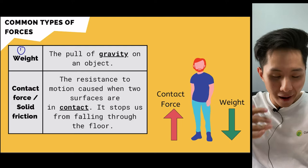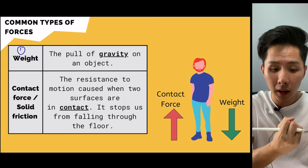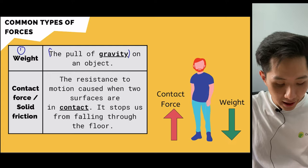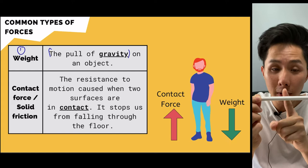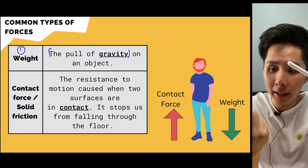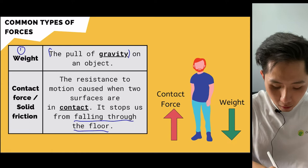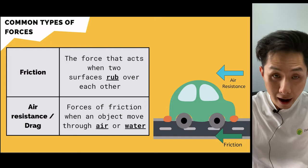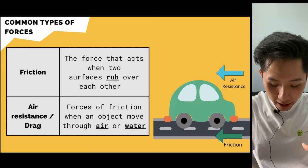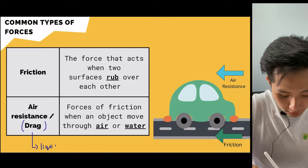In physics, weight is the gravitational force exerted by the Earth on all objects. We also have contact force — for instance, I'm holding this pen and gravity is acting on it, but it doesn't fall down because of the contact force between the pen and my finger. It stops us from falling through the floor. The third type is friction, the force that acts when two surfaces rub against each other. And air resistance is similar to friction but happens in air, while in water it's called drag.